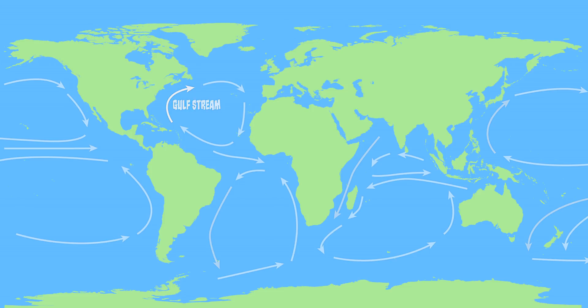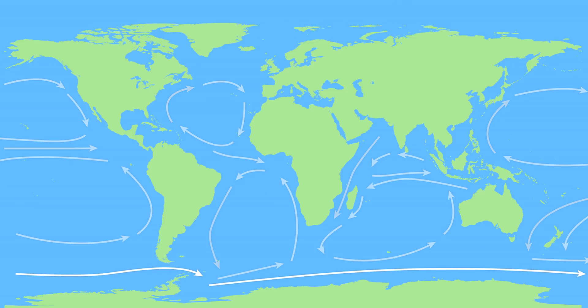Other surface ocean currents include the Antarctic Circumpolar Current. This current is the result of the prevailing westerlies in the Southern Hemisphere flowing around the world unobstructed by any continents. This results in a current that flows eastward around the entire globe. The Antarctic Circumpolar Current is the largest of the surface ocean currents and leads into the southern portion of the gyres in the Southern Hemisphere.